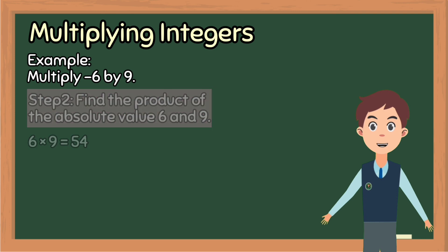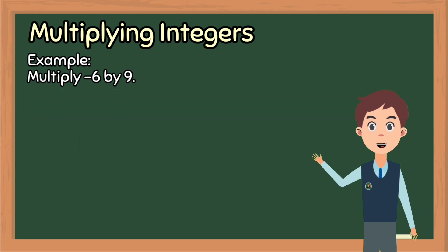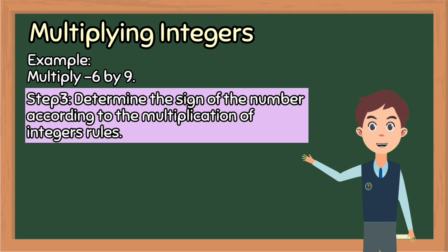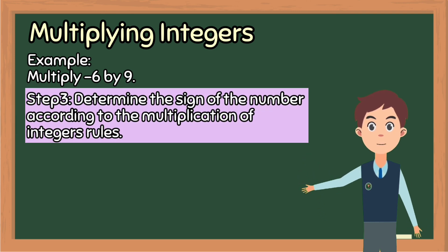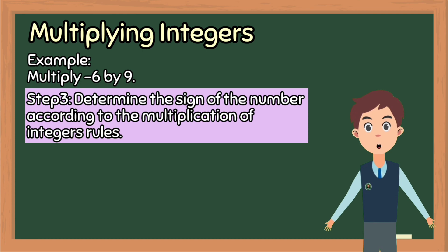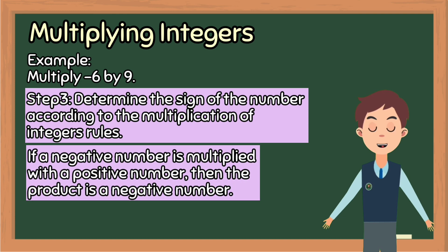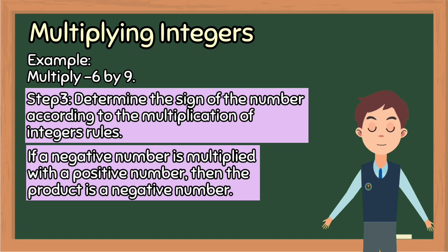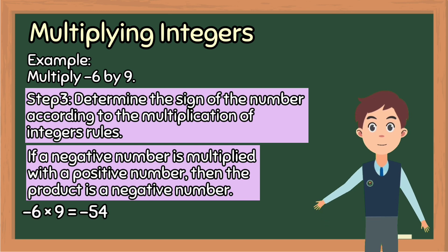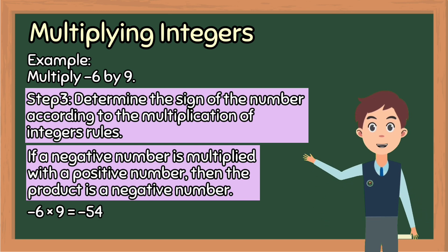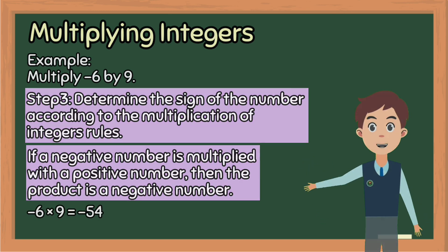Now on step 3: determine the sign of the product according to the multiplication of integers rules. According to the multiplication of integers rule, if a negative number is multiplied with a positive number, then the product is a negative number. Therefore, negative 6 times 9 is equal to negative 54.